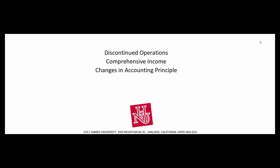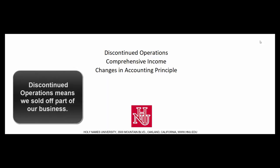Chapter 18 of our book purports to be about financial analysis, the big picture. But before it gets to the nuts and bolts of financial analysis, it talks about three things: discontinued operations, comprehensive income, and changes in accounting principle.